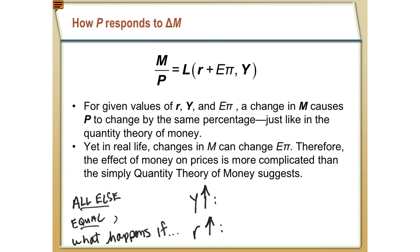Generally speaking, expectations play a large role in macroeconomic models. We're going to see here that the price level is actually influenced by expectations — it's not just what's happening today, it's influenced by what we think is going to happen in the future. So let's see how the price level responds to a change in M, the money supply, and then let's also look at what happens when some of these other variables change.